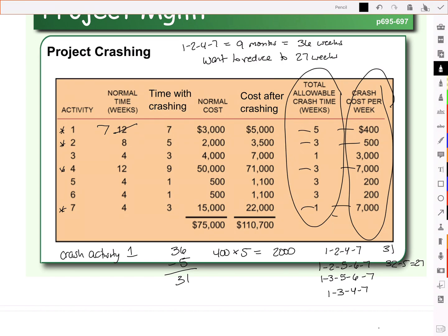So we go 1, 3, 5, 6, 7. Before, 1, 3, 5, 6, 7 took 7 months. So 28 weeks. And we just shaved 5 weeks off of activity 1. So it's now taking 23.